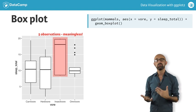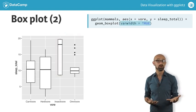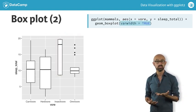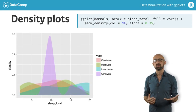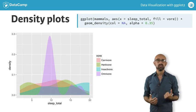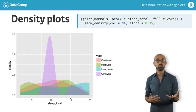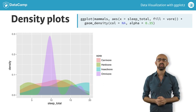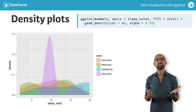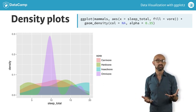We can remedy this problem by setting the width of each box relative to the n value for each group. Density plots could also work in this situation. The advantage here is that we can overlay multiple density plots on top of each other, so we can compare distributions more easily. However, we once again lose information about the group size.